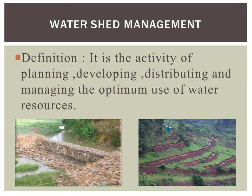Before starting with the presentation, let me tell you the meaning of watershed. Watershed is the combination of two words: water and shed. Shed includes soil, land, and water bodies. When we consider a specific area, when it is raining, water gets deposited or percolated in that area, and finally it gets accumulated at a single point or single outlet. Such a type of area is known as a watershed.